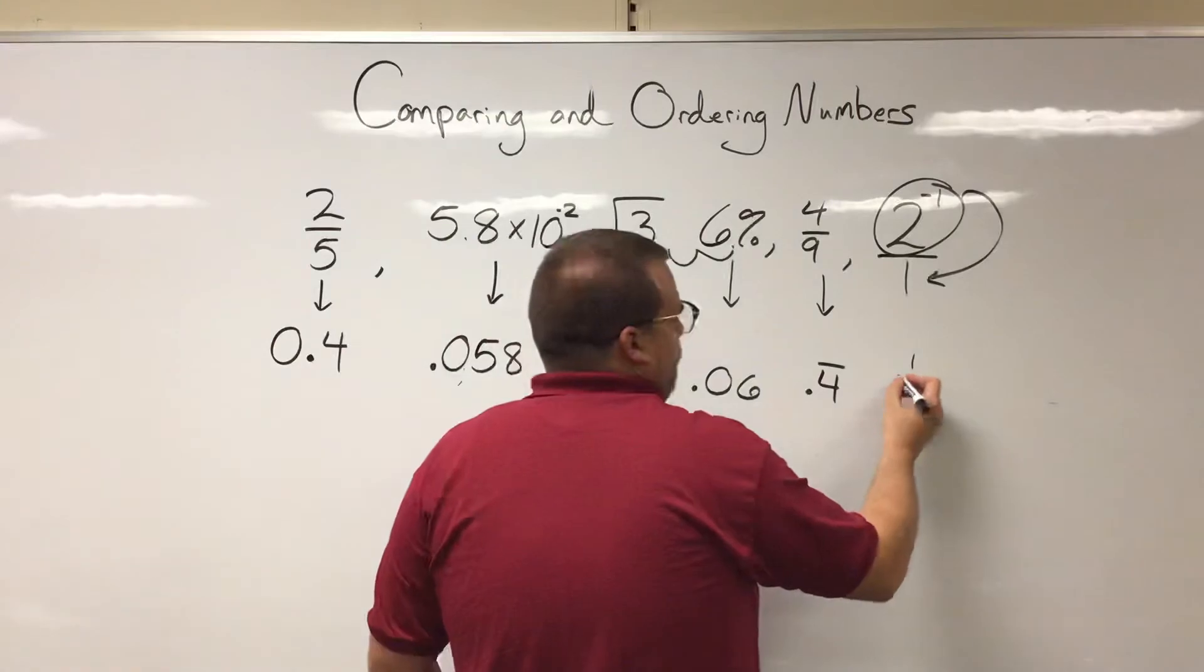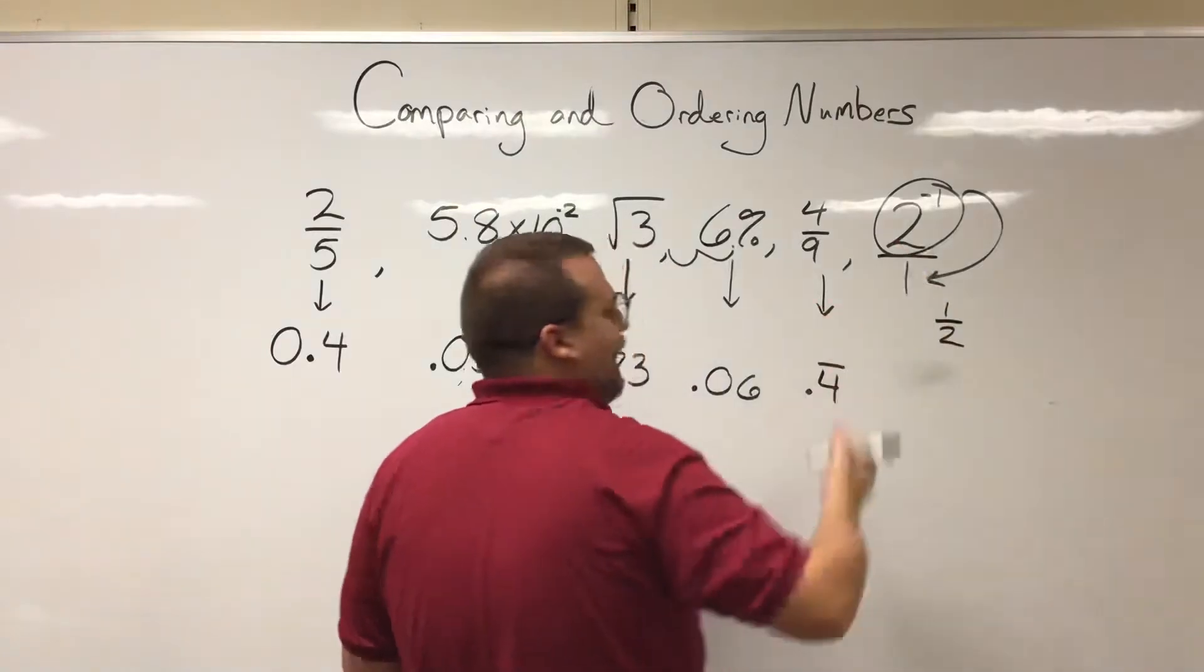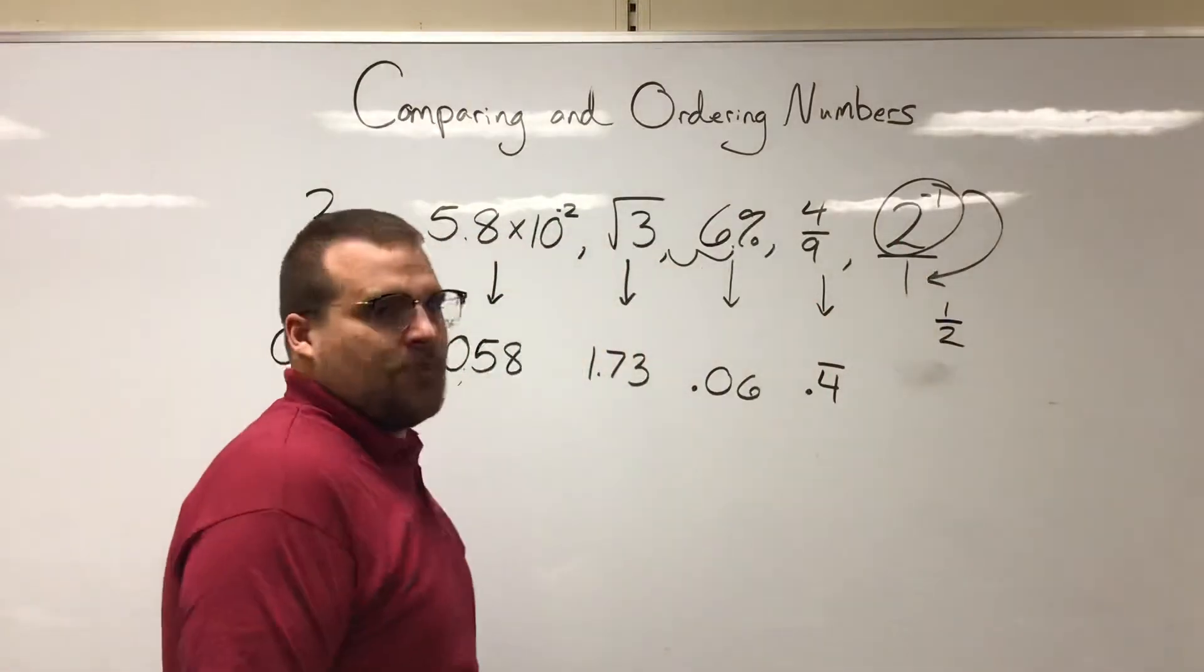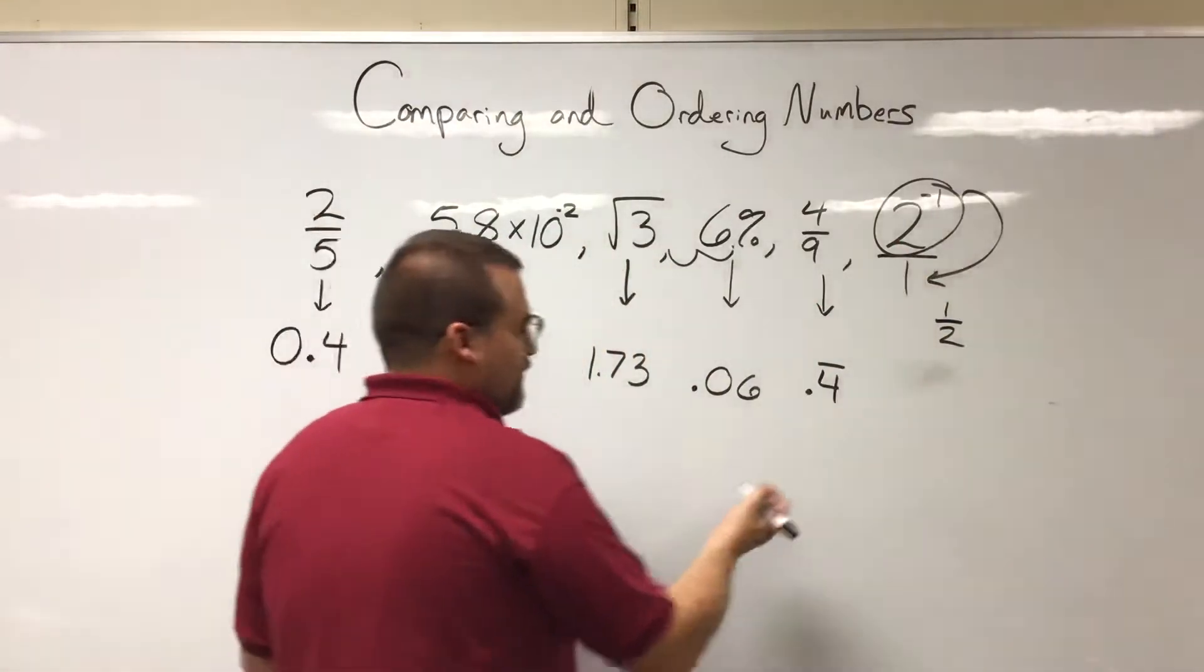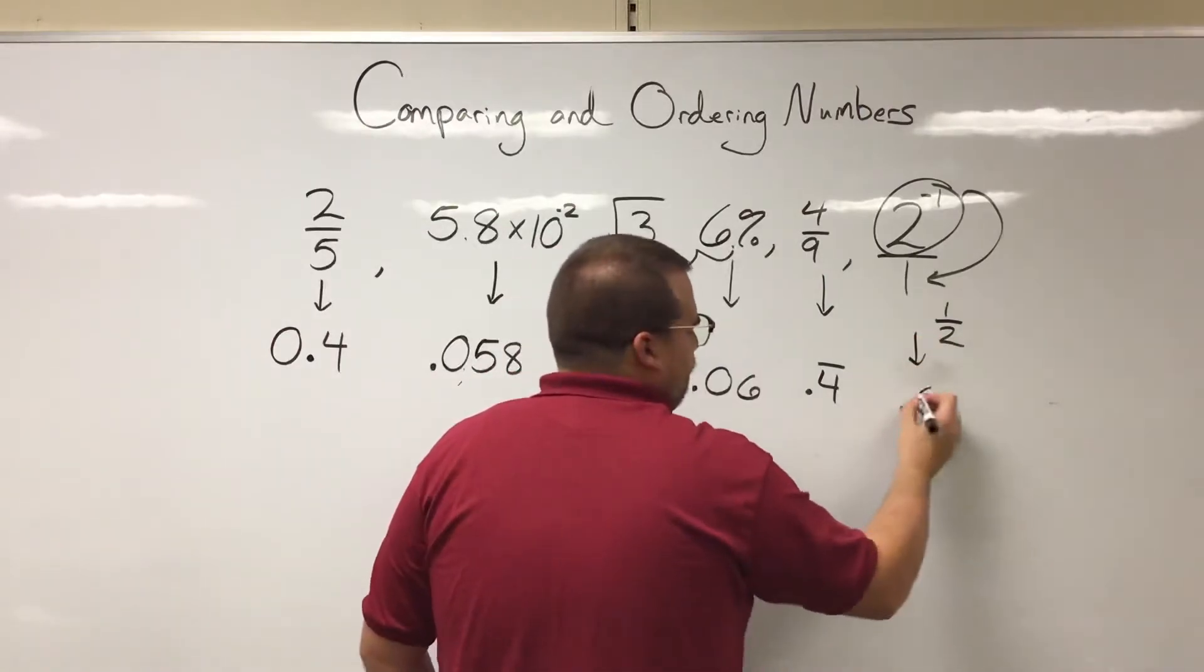So we would have one over two to the first, or just one over two after we move that to the denominator. And we know one over two, if we go ahead and divide that into a calculator or something, is 0.5.